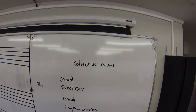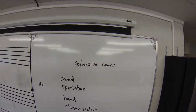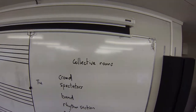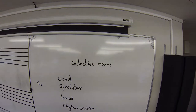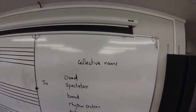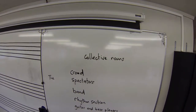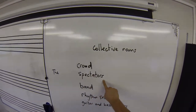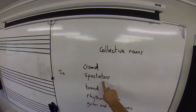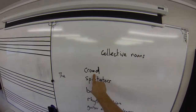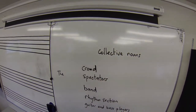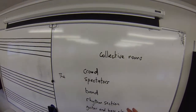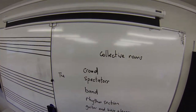Collective nouns can produce some problems for us when we're matching them up with verbs. A collective noun is when we take a group of spectators — many individuals — and we call them a crowd. We refer to them as one body of people, and the word becomes singular: it's a crowd.